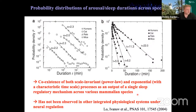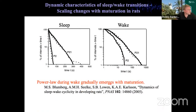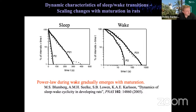This also has relevance to the physiological process of maturation. For baby rats, this power law develops over time — two-day-old rats show an exponential distribution for wake durations, and the power law only develops over about three weeks. For sleep durations, the exponential decay remains the same but the time constant increases over time.